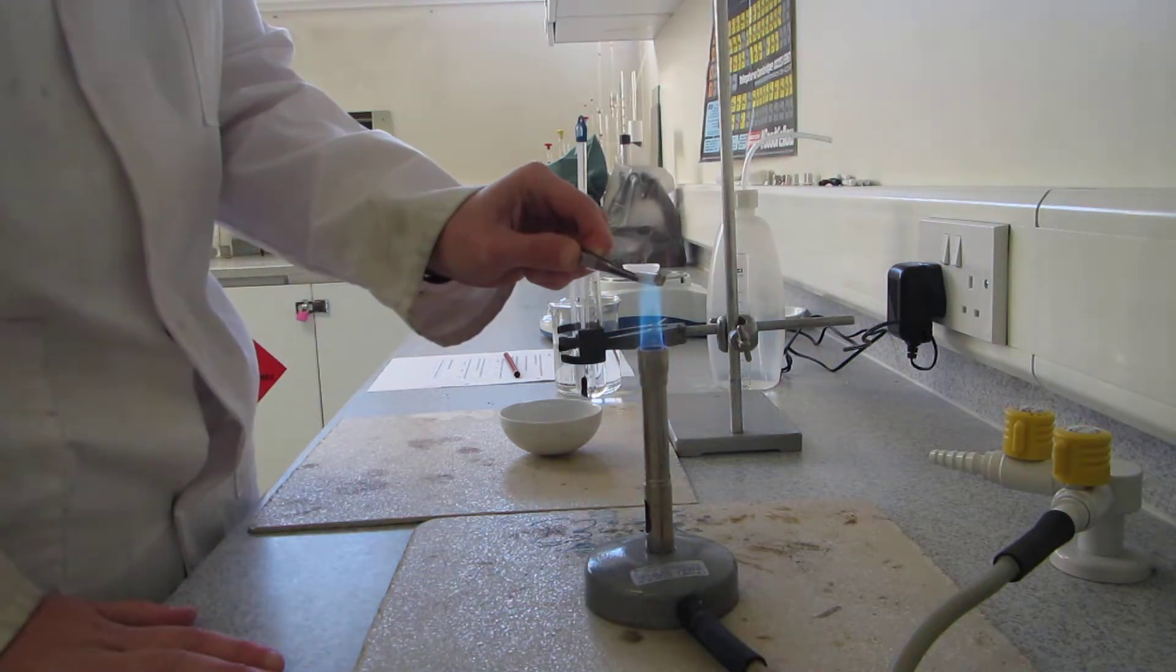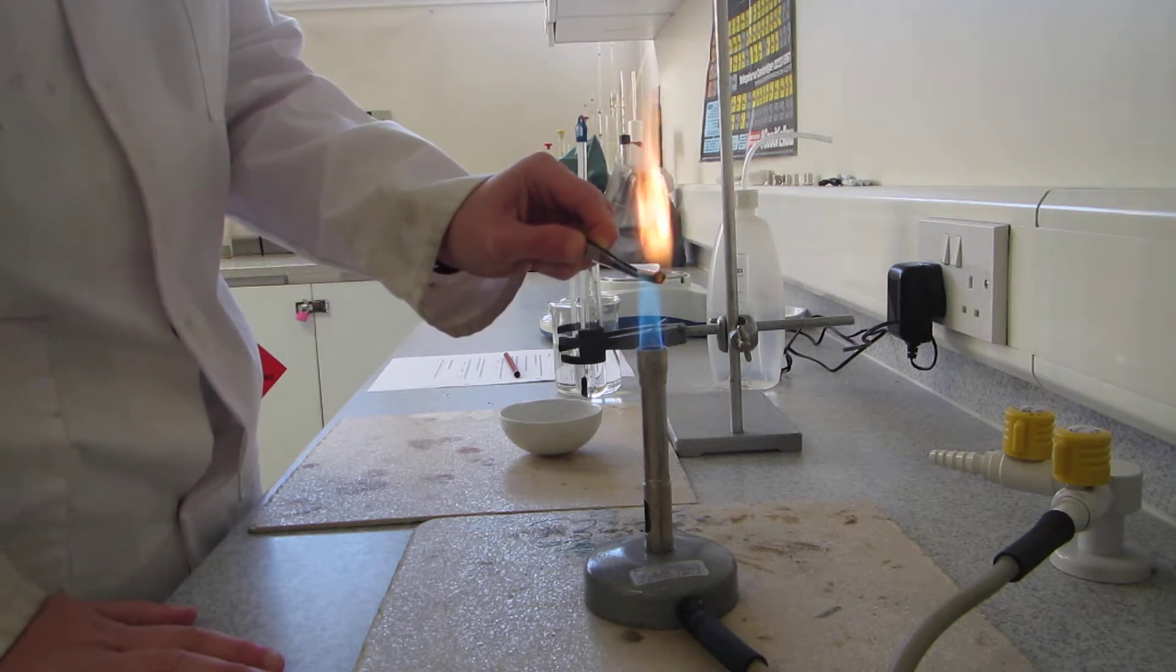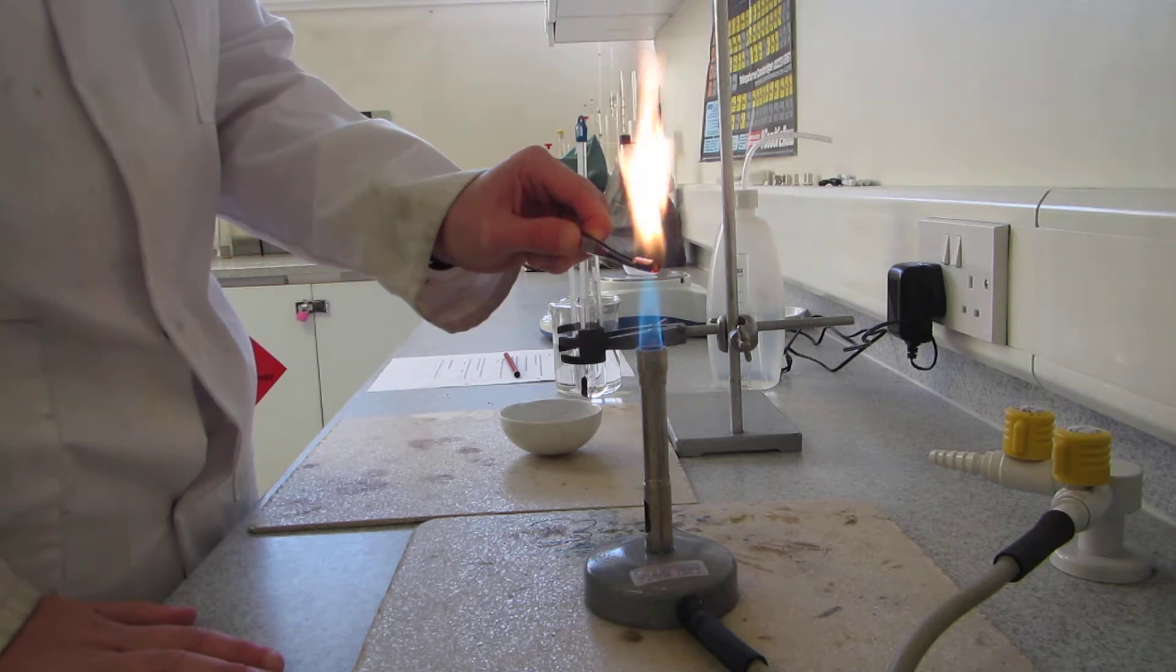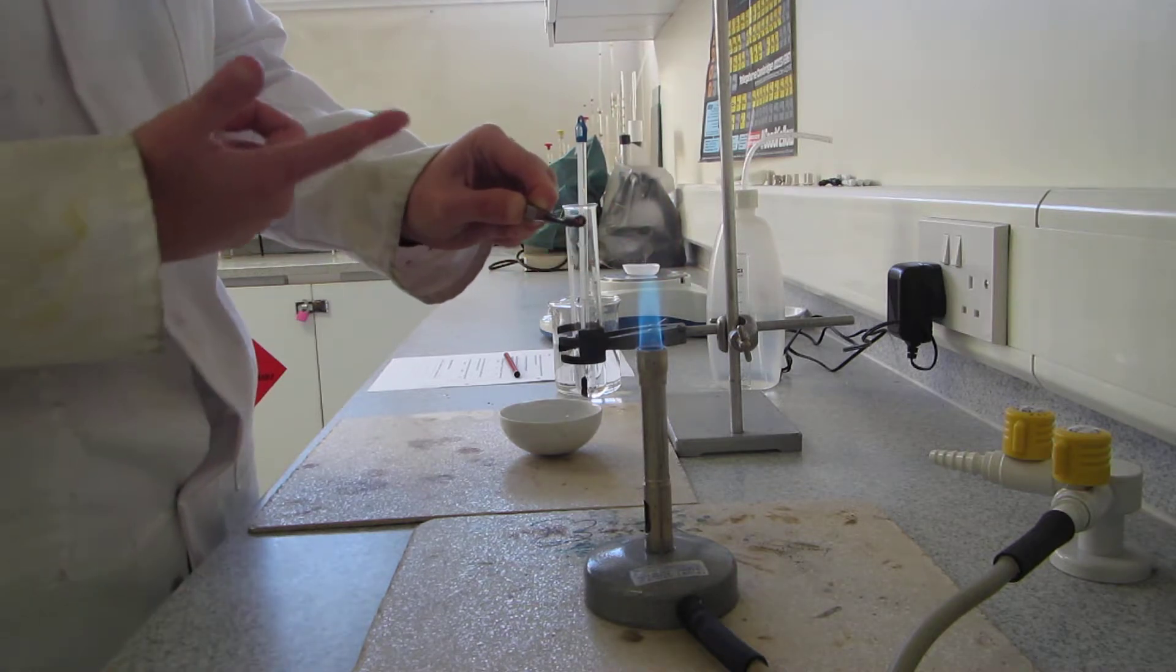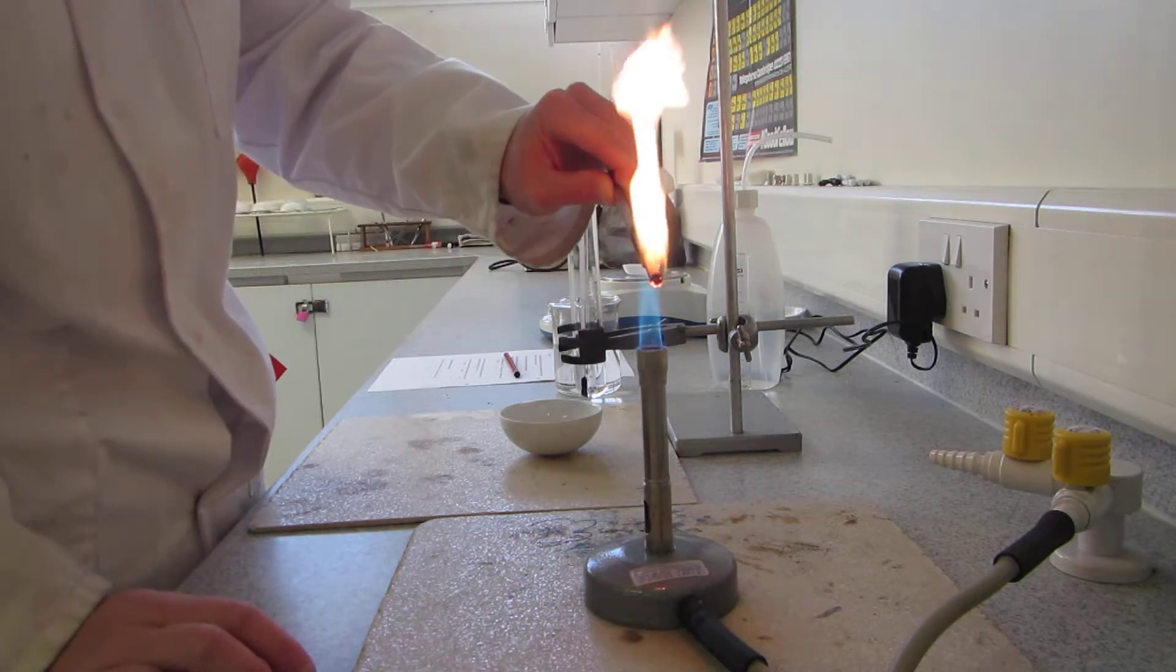Now hold your wood chip in. You can hopefully see that it's starting to set alight, but don't finish just yet. Keep holding it there. See when I take it out, the flame goes. So keep holding it in the flame until the thing is alight.